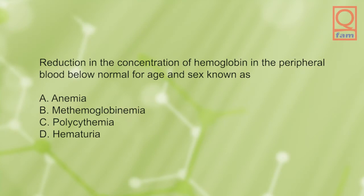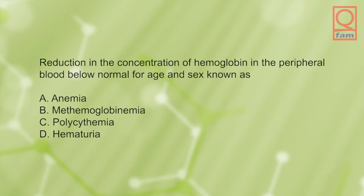Reduction in the concentration of hemoglobin in the peripheral blood below normal for age and sex known as: A) anemia, B) methemoglobinemia, C) polycythemia, D) hematuria. The answer is A, anemia.